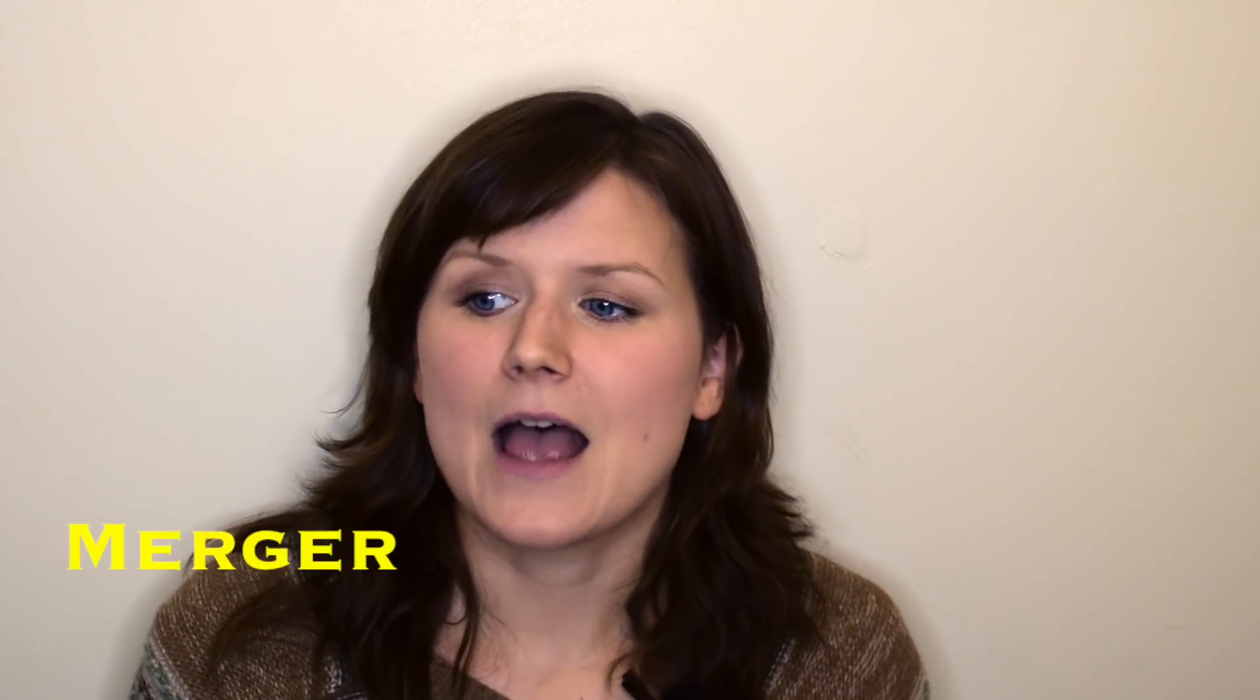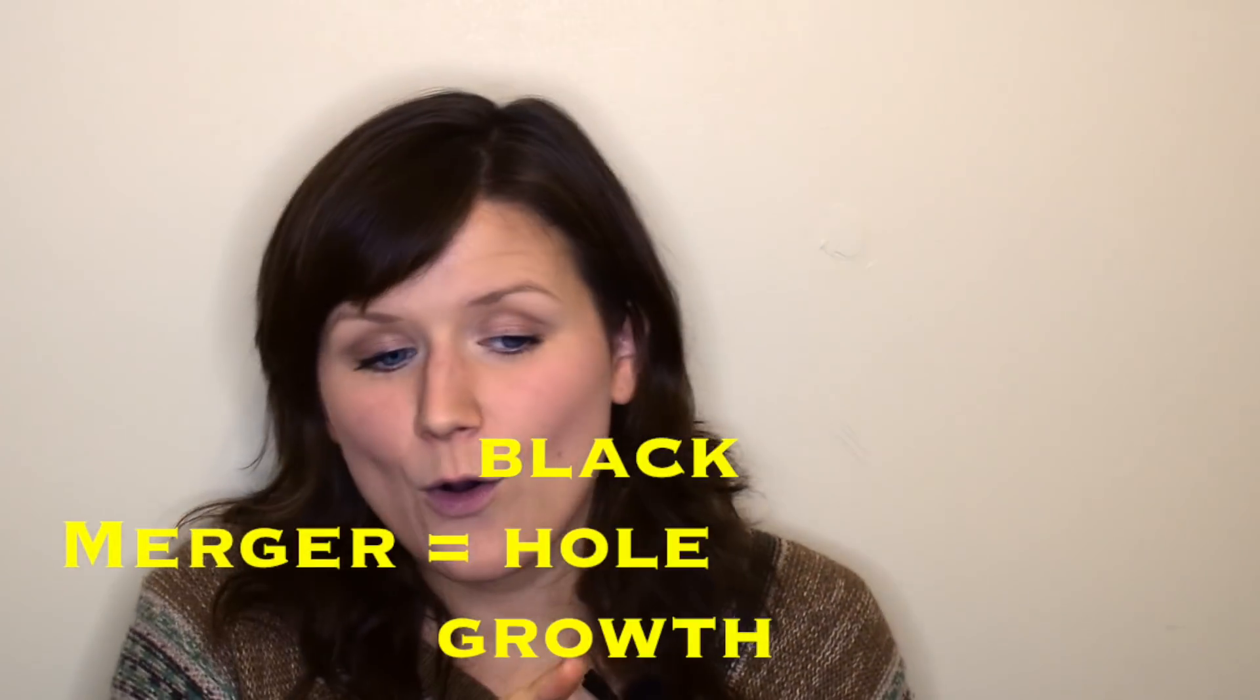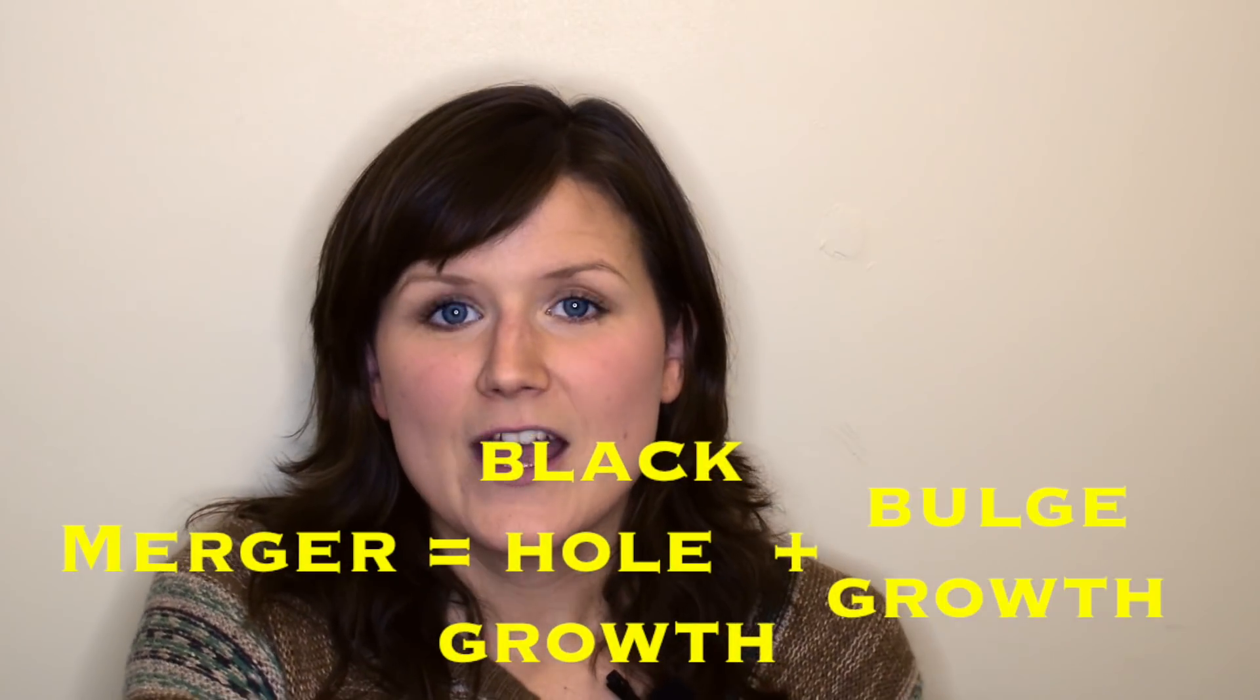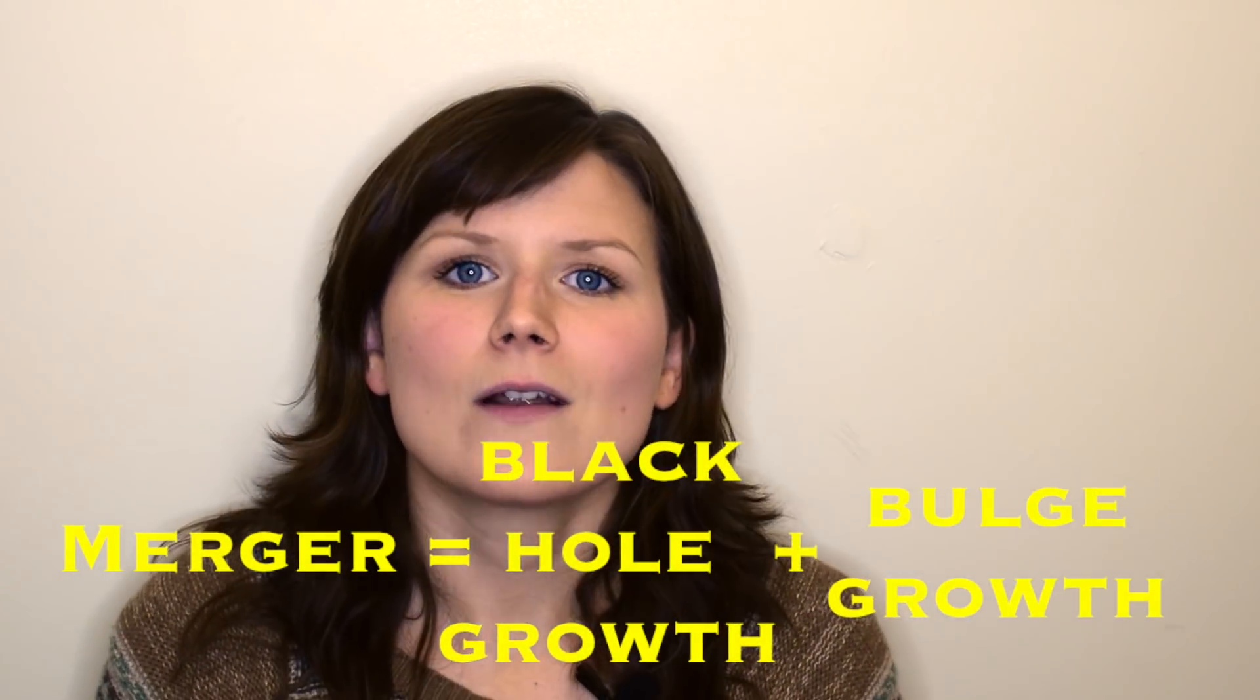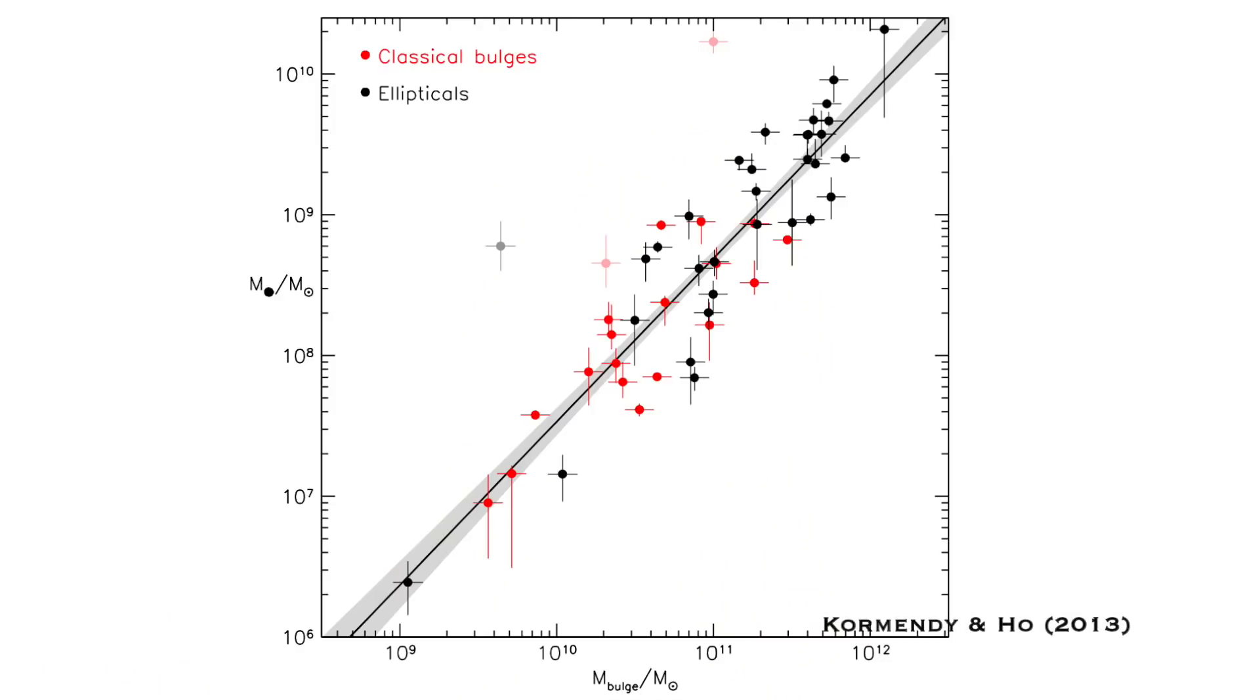Basically what we think is that merger equals black hole growth and bulge growth, and we see that in very tight correlations between the mass of the bulge of a galaxy and the mass of the supermassive black hole, and the same thing for the total mass in a galaxy and the supermassive black hole mass as well.